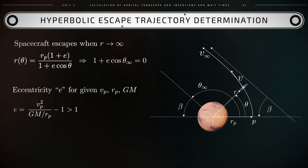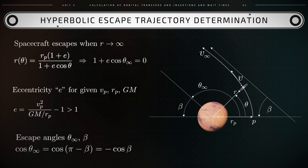Hence, 1 plus e times the cosine of the angle theta_infinity will equal 0. In this result, theta_infinity is the angle under which the spacecraft has reached an infinitely large distance from the center of the planet. According to the geometry of this hyperbolic trajectory, the cosine of theta_infinity equals the cosine of (pi minus beta), which in turn equals negative cosine of beta. Hence, for given vp and rp, the eccentricity e and angle beta are directly determined.